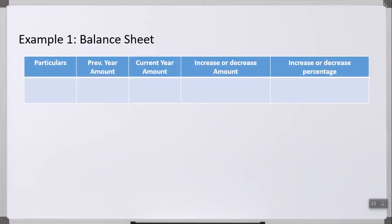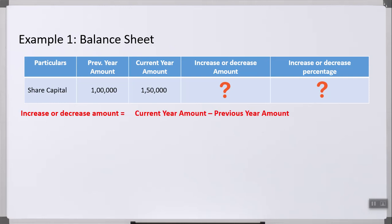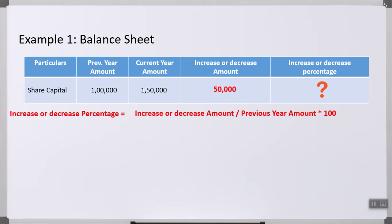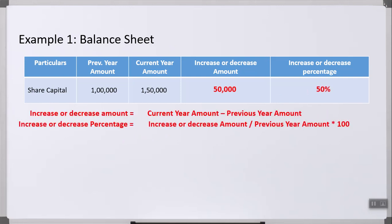Let me explain with the help of an example. The first example is a balance sheet — let's take share capital as the item. Previous year amount of share capital is 1,00,000 and current year amount is 1,50,000. The increase or decrease amount equals current year amount minus previous year amount, so 1,50,000 minus 1,00,000 equals 50,000. The percentage is calculated as increase or decrease amount divided by previous year amount into 100, which is 50,000 divided by 1,00,000 into 100 = 50%. So share capital has increased by 50,000, that is 50%.